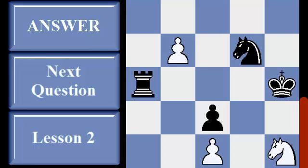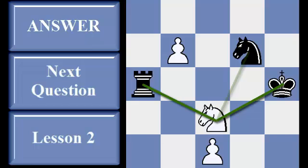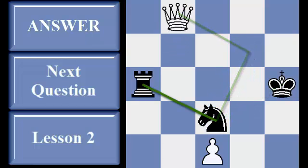Black's defense is overloaded. The knight has too many responsibilities, take advantage. Pause the video for more time. By forking the king and rook, white lures the knight away from guarding the promotion to save its rook.